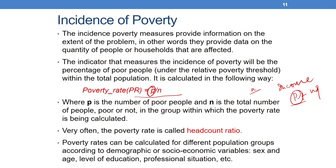Poverty rates can also be calculated for different population groups according to demographic or socioeconomic variables: sex and age, level of education, professional situation, etc. For example, in calculating income poverty in India by gender, age, education level, and professional situation, we might find that there is a lot of income poverty among females, underage populations, those who have not attained at least secondary education, and those in the informal sector. Looking at income poverty by different population groups gives us a very good picture of our analysis.